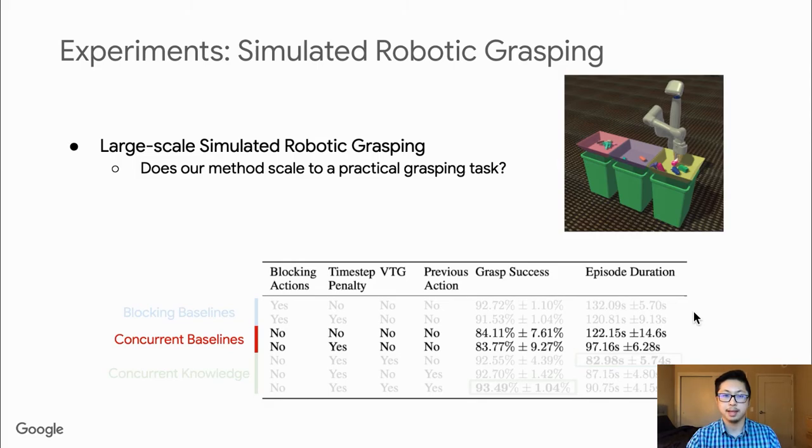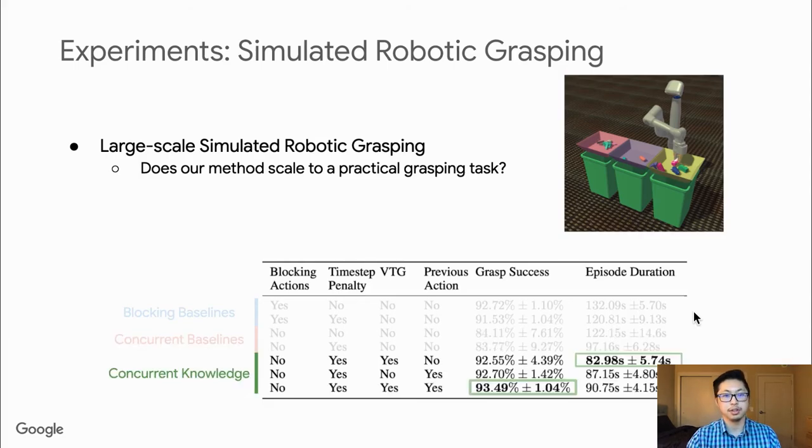Next, when we allow the actions to be executed concurrently, the baseline models do worse. Only by using concurrent Q-learning features do we learn policies that perform well with concurrent actions. In fact, these concurrent Q-learning models are able to learn policies that are almost 40% faster than the blocking baseline models.